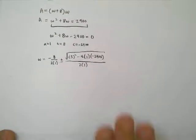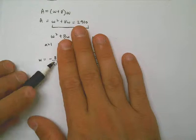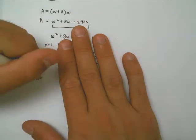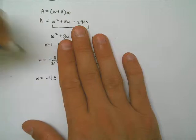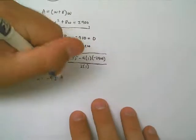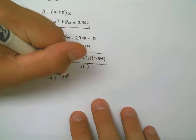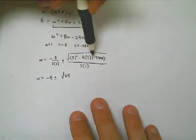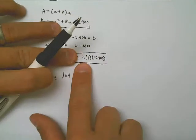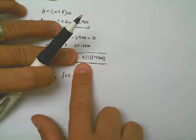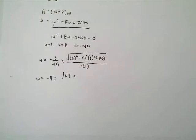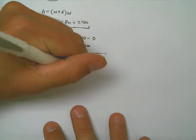So, let's see here. That would be 8 over 2. 8 over 2 reduces to 4, but it is negative. The width is negative 4 plus or minus. Square root of 8 squared is 64. I have a negative 4 times a positive 1 times a negative 2,900. So, if I look at just these three, I see a double negative show up. That means I'm going to have a plus. And 4 times 2,900, that's what calculators are for. 4 times 2,900 is 11,600. And that's all over 2.